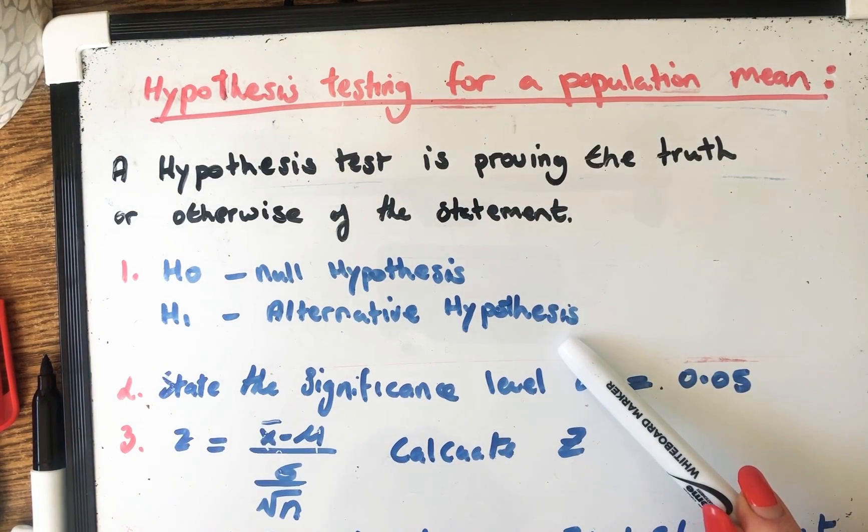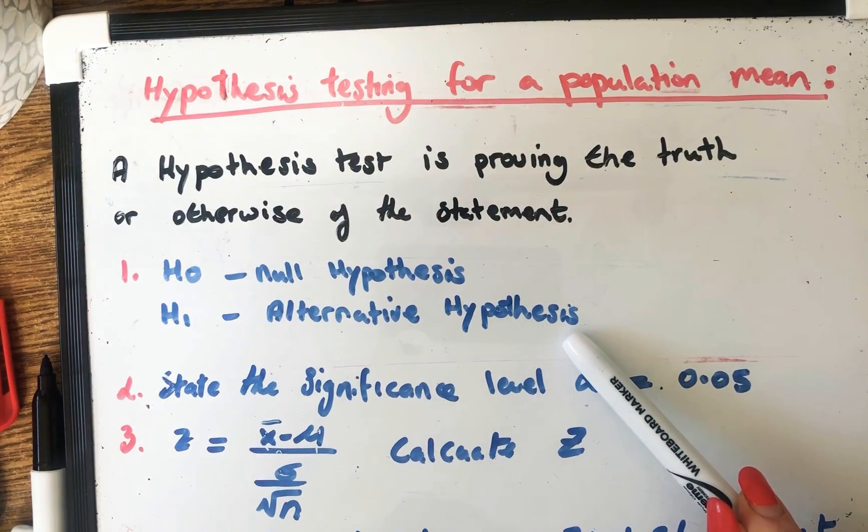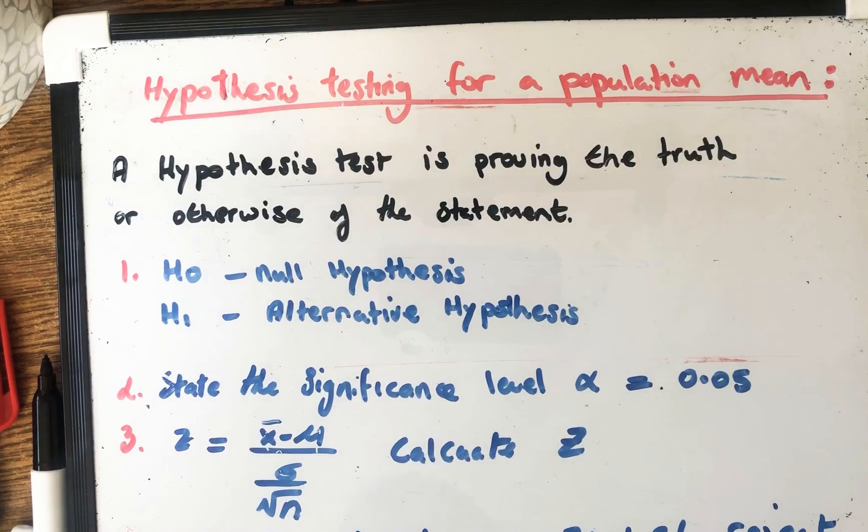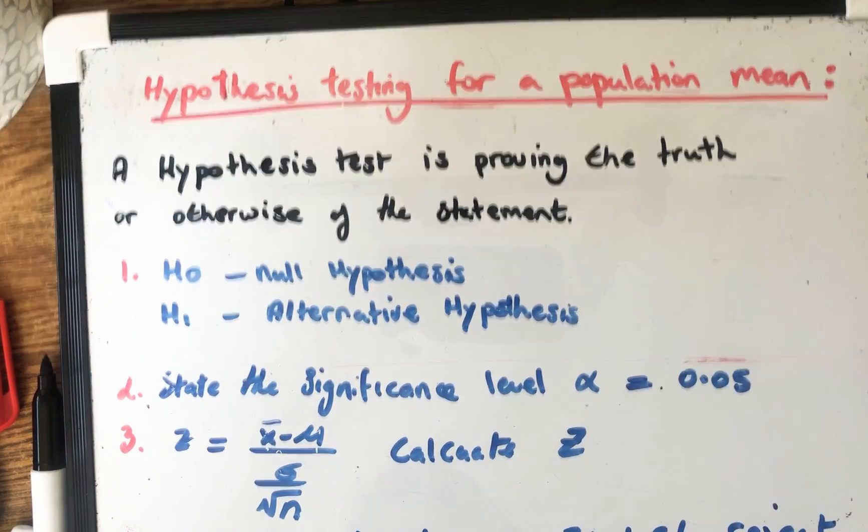And the alternative is the complete opposite of the null where we would say that the coin is in fact biased. And you would have to prove then in your question whether you're going to keep the null or you're going to go for the alternative instead. And you do that by finding what we call a Z value.